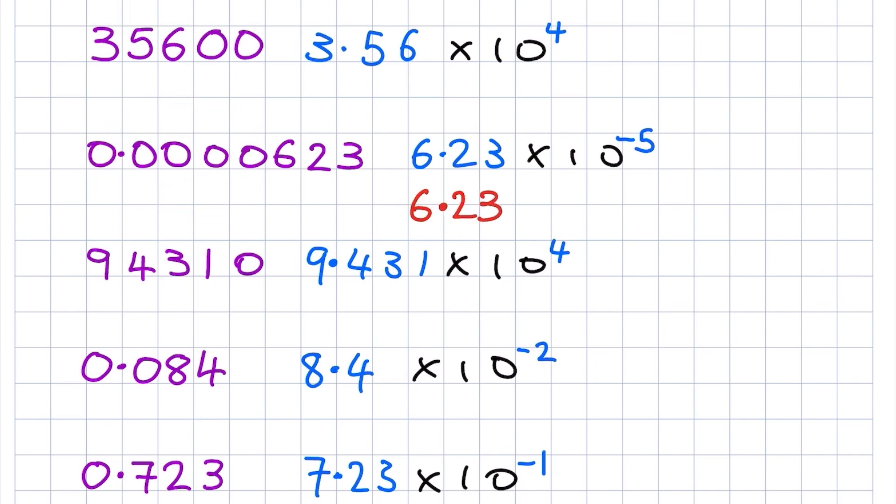So you'd write out your decimal number, jump the point back 1, 2, 3, 4, 5. And in these empty spaces, you just put the zero.